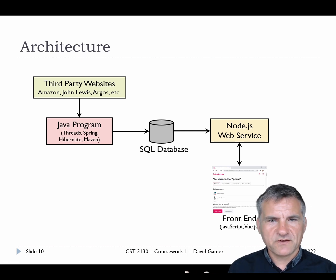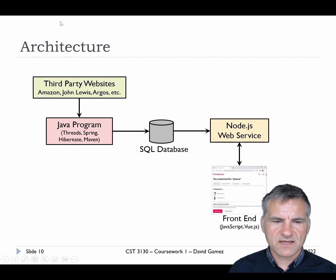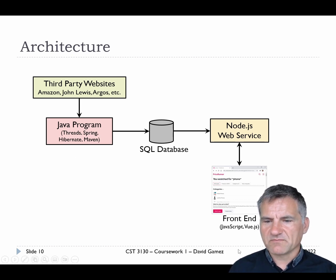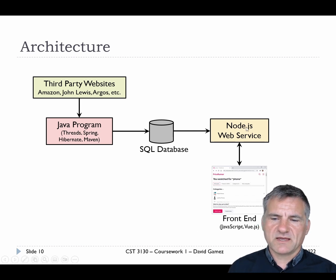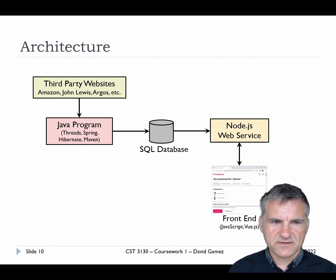So to summarise: third-party data is pulled by the Java program, stored in the database; completely separate, the back end of the website is implemented in Node.js, connecting up to the front end, which then exposes and shows the data to the user.